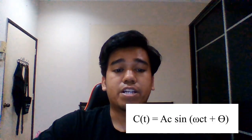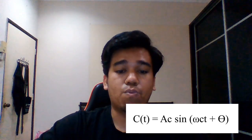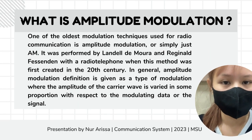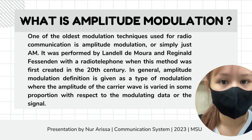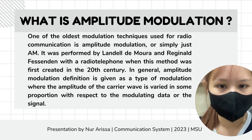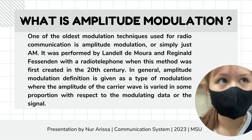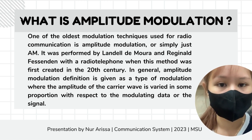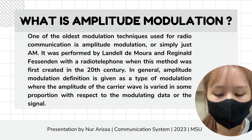Modulation is the process of superimposing a modulating signal onto a carrier wave, characterized by adjusting any of a carrier wave's basic parameters in response to the modulating signal. A sine or cosine can be used to symbolize a carrier wave. Amplitude modulation is one of the oldest modulation techniques used in radio communications, simply called AM for short.